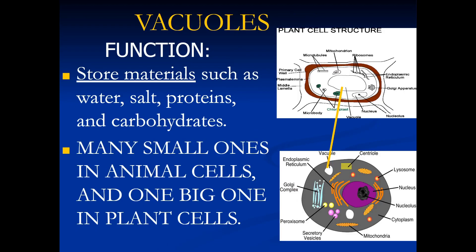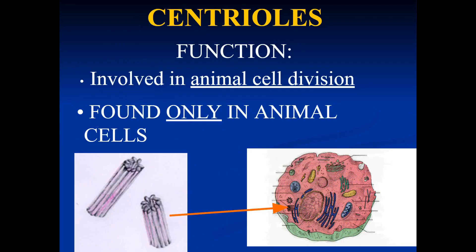Vacuoles store materials such as water, salt, proteins, and carbs — it's like a bookshelf where it stores many books and other items. Centrioles are involved in cell division and are found only in animal cells.